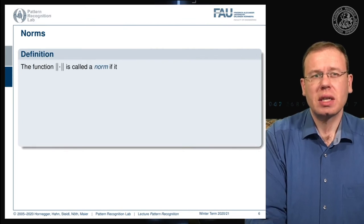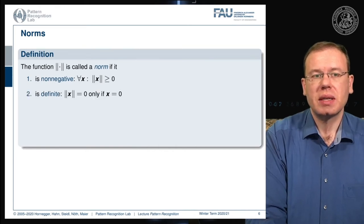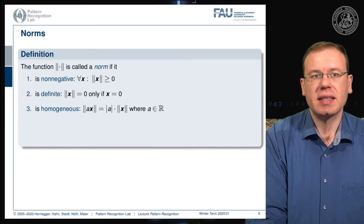What's a norm actually? The function indicated with double bars is called a norm if it is non-negative—the result is always zero or greater for all x. It should be definite, meaning it's zero only if all entries of x are zero. And it should be homogeneous, meaning that if you multiply a scalar a with x and take the norm, this is the same as taking the absolute value of a multiplied with the norm of x.